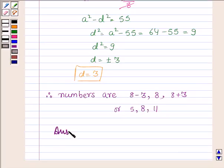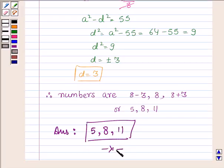So the required answers are the three numbers in AP are 5, 8, and 11, such that their sum is 24 and product is 440. So this completes the solution. Take care and have a good day.